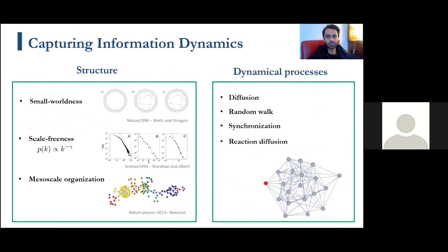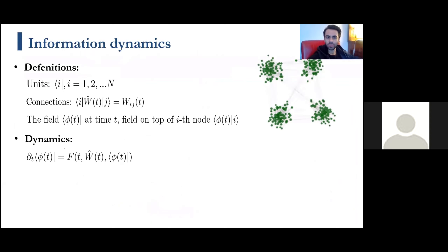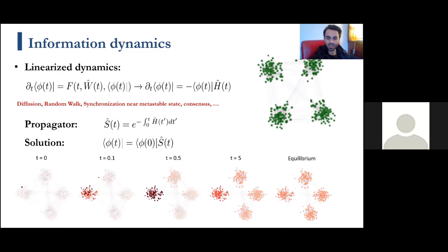To capture information dynamics, one needs to consider the structure — which is a network — and also the dynamical process governing the flow of information within the structure. We represent nodes by canonical vectors and have an adjacency matrix which can be binary or weighted, time-dependent or static. We also assume a field on top of the network; if the field moves from one node to another over time, those nodes have information exchange happening.